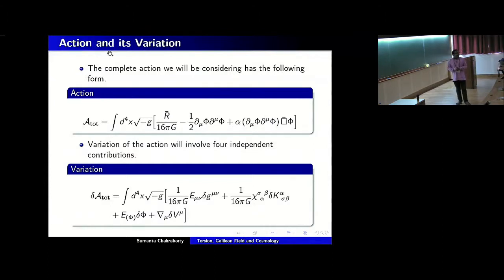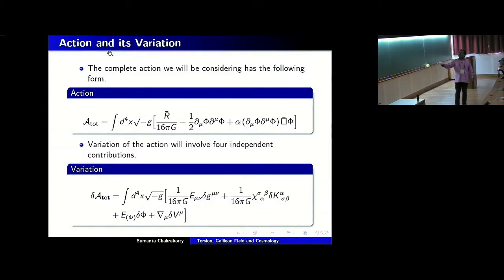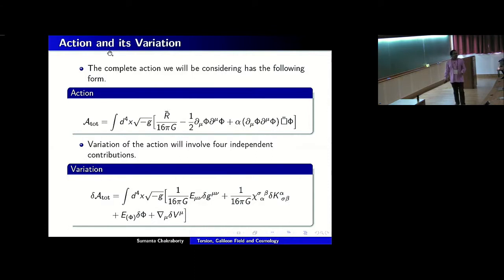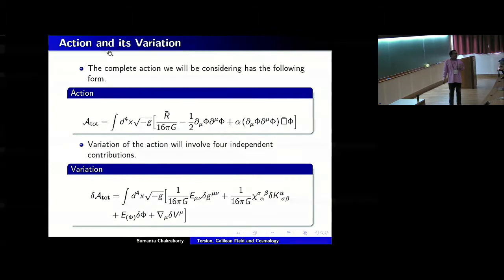Let us come to the action we will be working with. I am working in four dimensions with the action ∫d⁴x √(−g) [R̄ − ½ ∂_μφ ∂^μφ + α φ □̄φ], where R̄ is the Ricci scalar in the presence of torsion, the minus-half term is the canonical kinetic term, the Galileon term now has a box operator in the presence of torsion, and α is a dimensionful coupling parameter. Varying the action gives three parts: variation with respect to g_μν, variation with respect to the contortion, and variation with respect to φ. The equation of motion for φ, which would simply be □φ = 0 for the canonical case, receives additional contributions here.